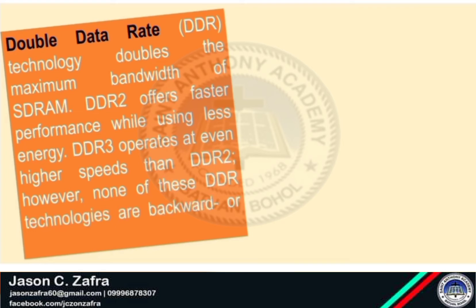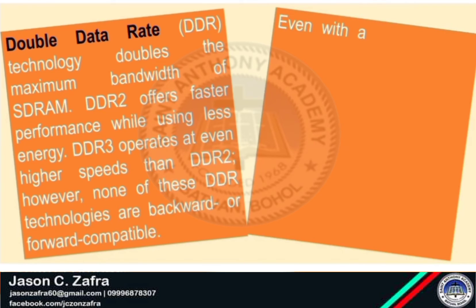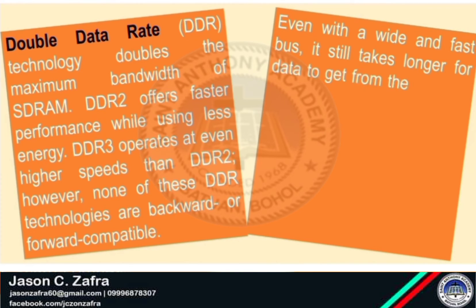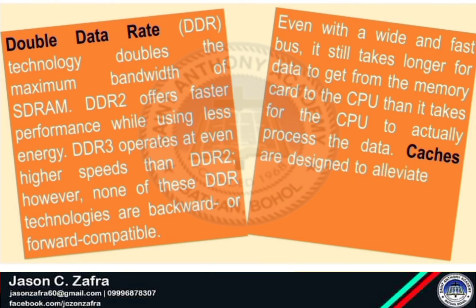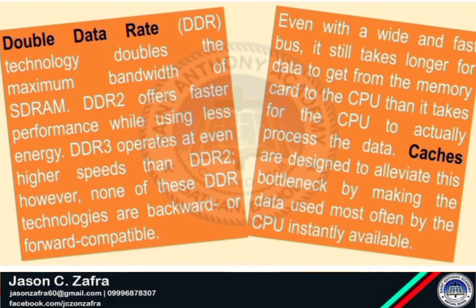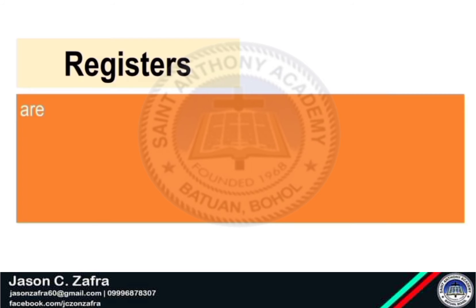DDR3 operates at even higher speed than DDR2. However, none of these DDR technologies are backward or forward compatible. Even with a wide and fast bus, it still takes longer for data to get from the memory card to the CPU than it takes for the CPU to actually process the data. Caches are designed to alleviate this bottleneck by making the data used most often by the CPU instantly available.